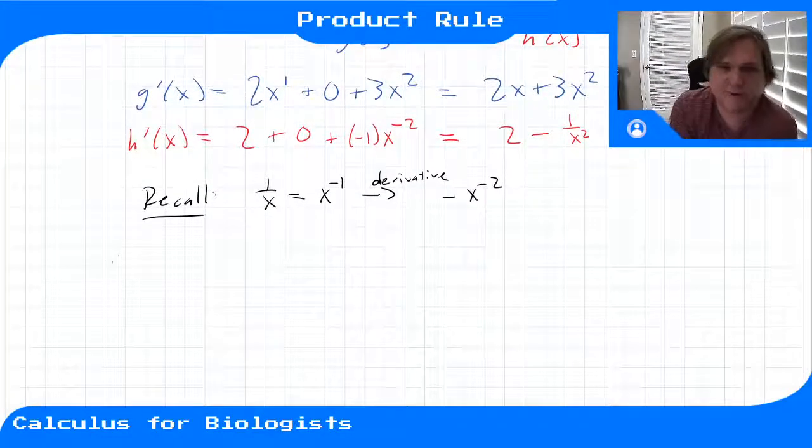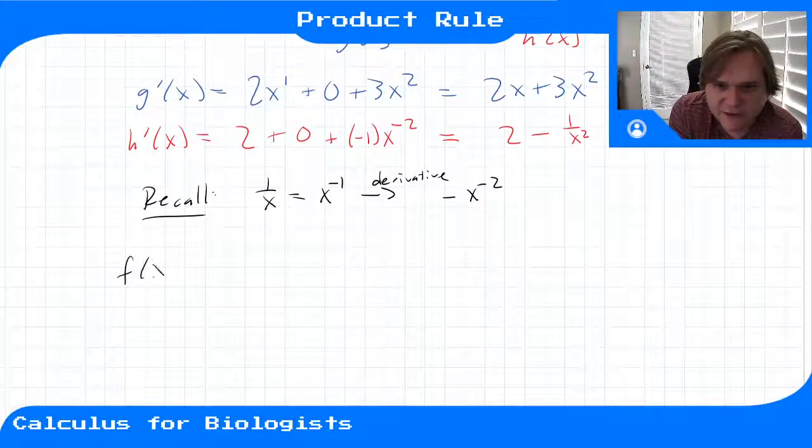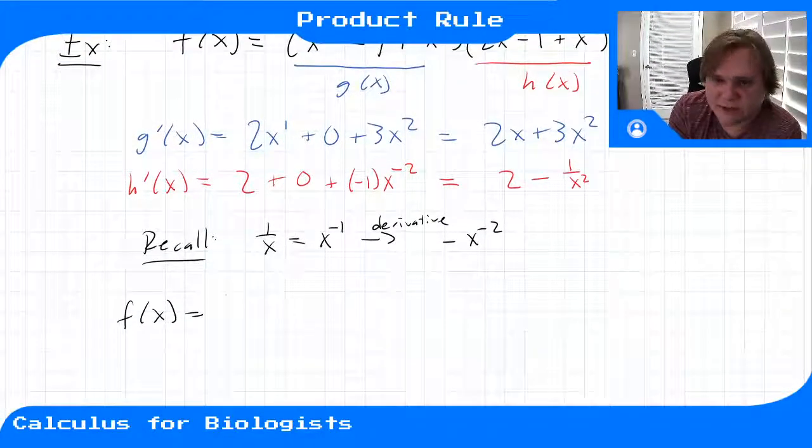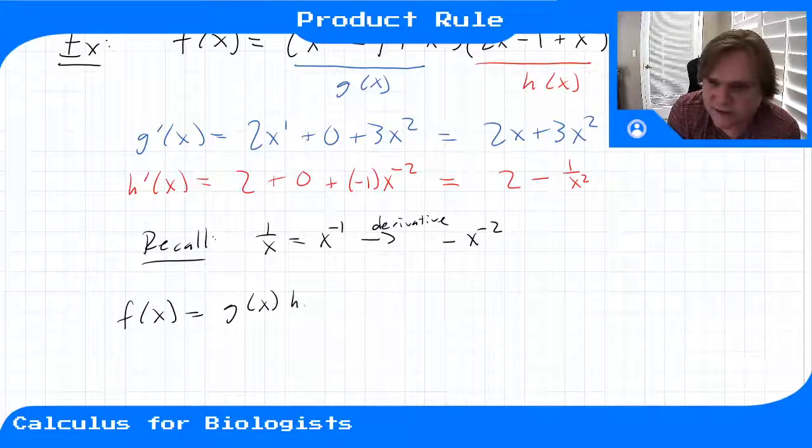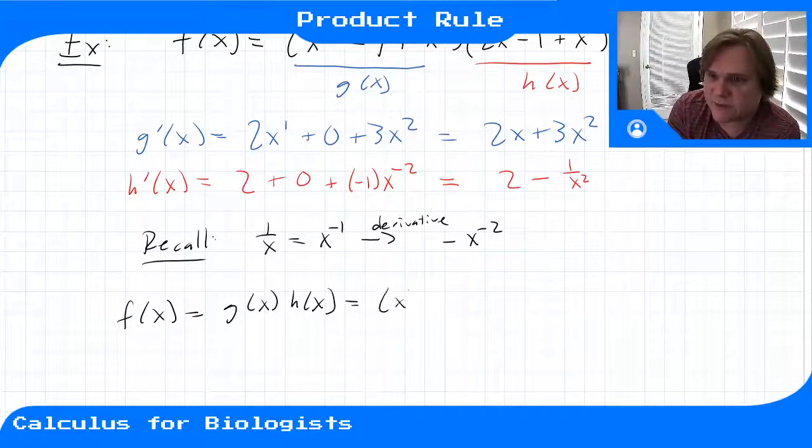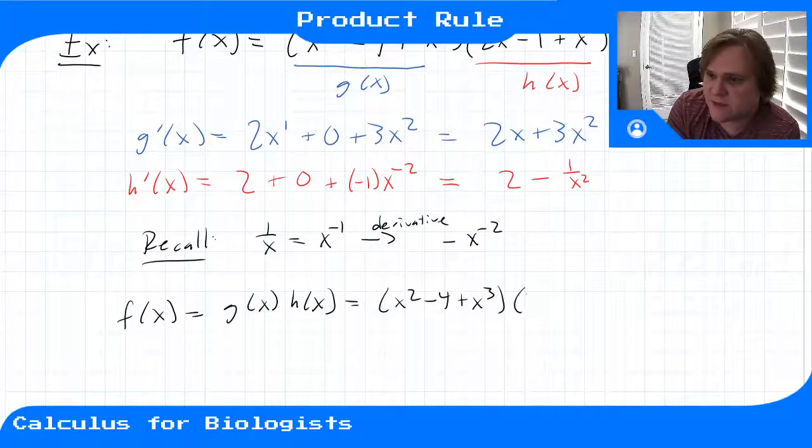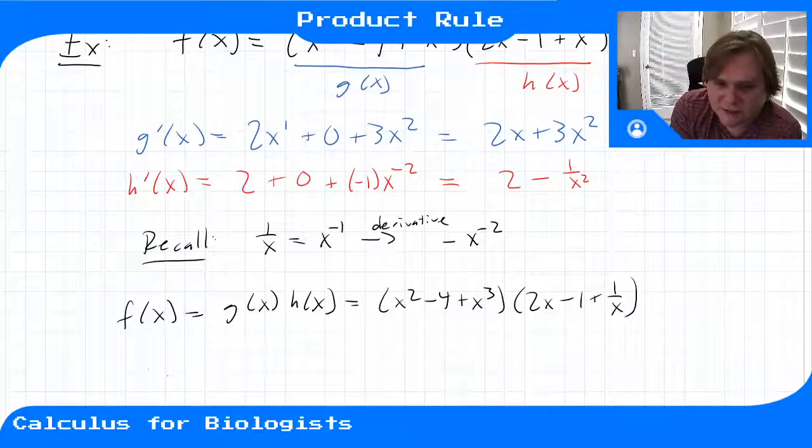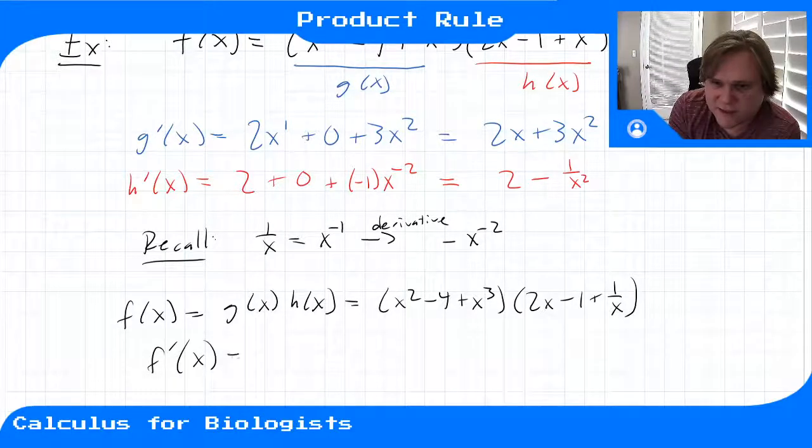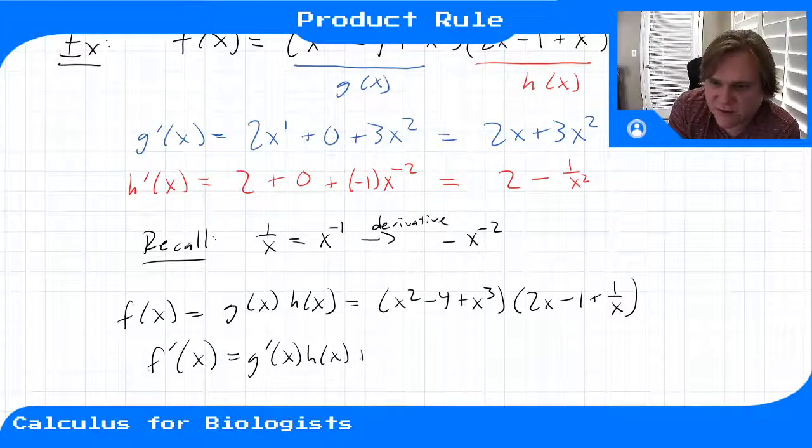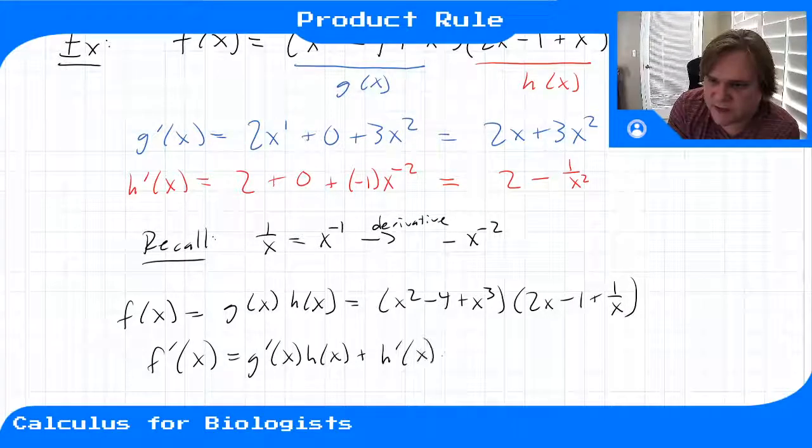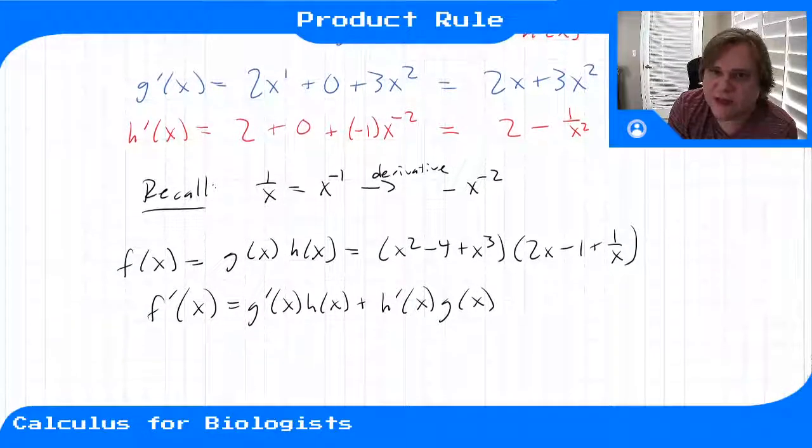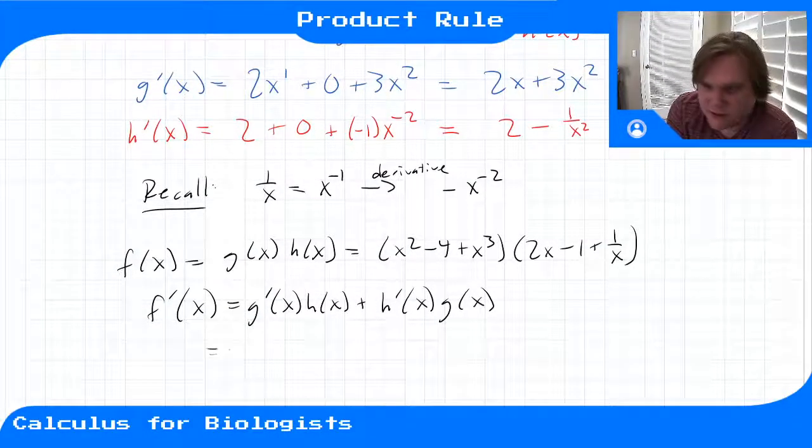So then our derivative of this whole function f of x, which was g of x times h of x, this was x squared minus 4 plus x cubed times 2x minus 1 plus 1 over x. So then f prime is g prime times h plus h prime times g. We have g, we have h, we have the derivatives of them. Let's write this out.